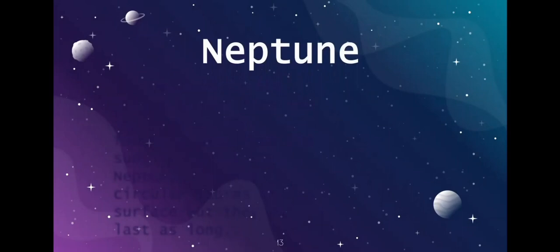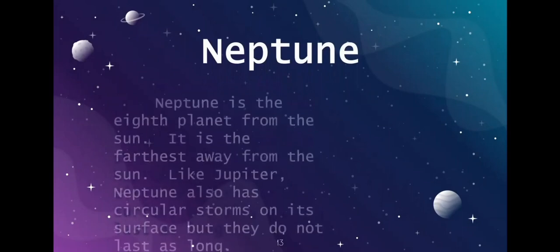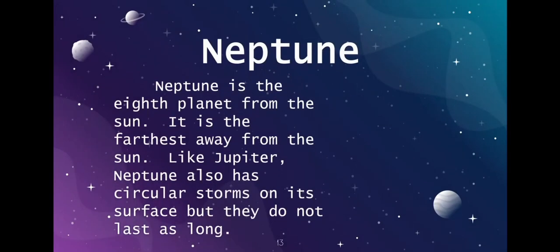Our final planet is Neptune. Neptune is the eighth planet from the sun and the farthest away from the sun. Like Jupiter, Neptune also has circular storms on its surface, but they do not last as long as Jupiter's storms. If you look closely at a picture of Neptune, you will see a great dark spot, which is a circular storm sometimes called the Great Dark Spot.